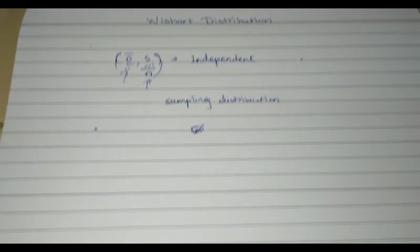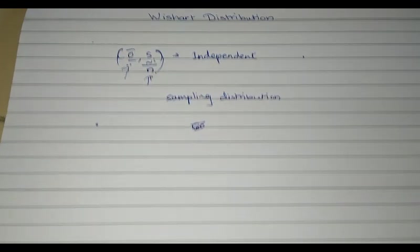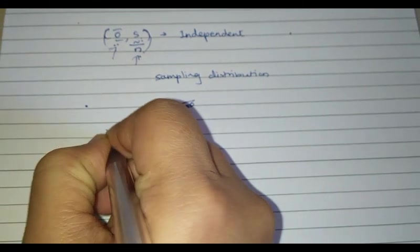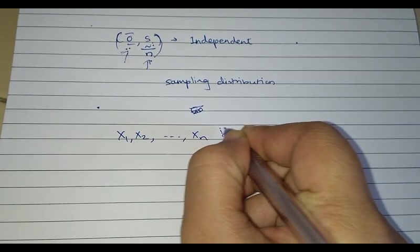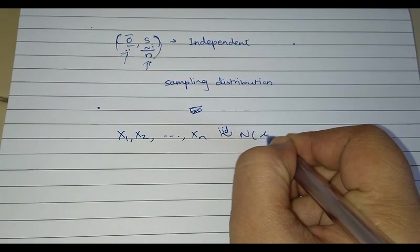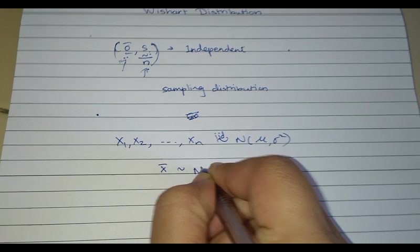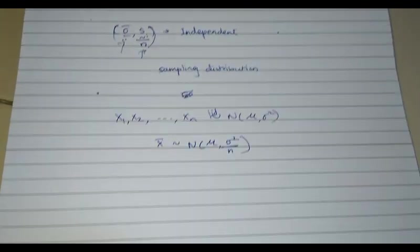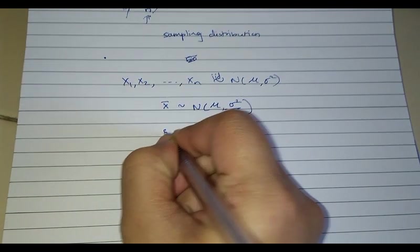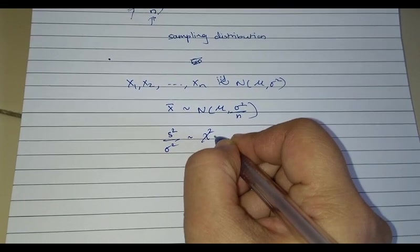In the linear case, you know that if X1, X2, ..., Xn are IID normal(μ, σ²), then X-bar also follows normal with mean μ and variance σ²/N. Similarly, S² upon σ² follows chi-square — this is also known to you.